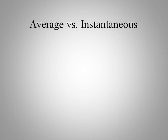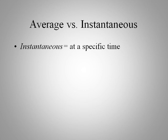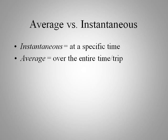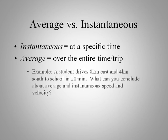Let's look at what the difference between average and instantaneous quantities are. If we look at instantaneous first, that means it's at a specific time, at an instant in time. Average however is over the entire trip. So let's take an example.